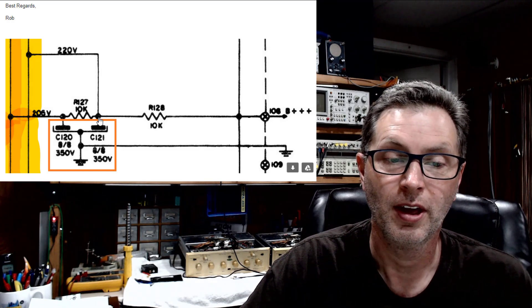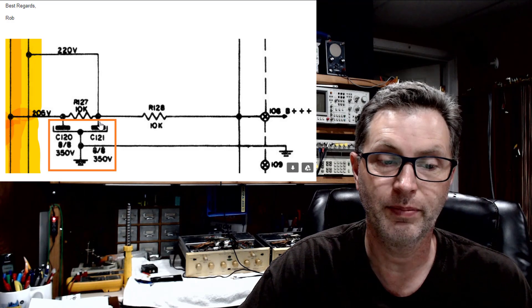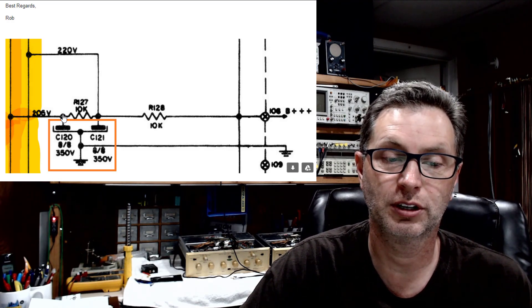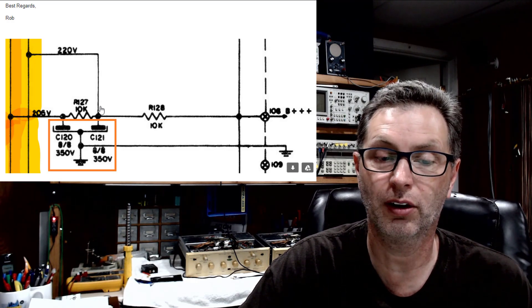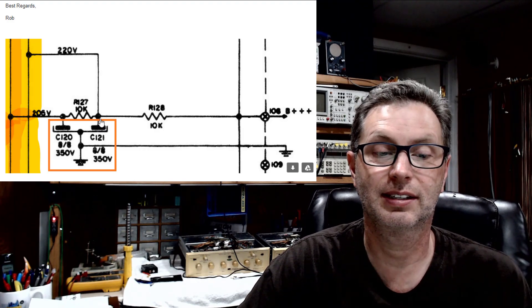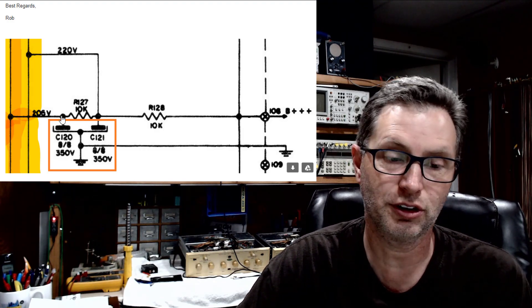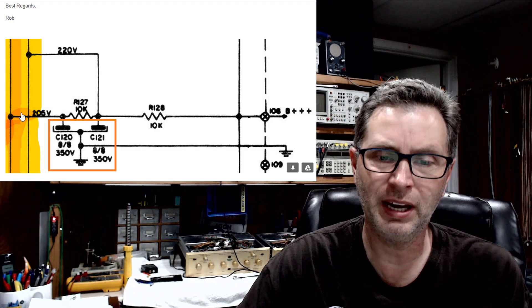In other words, you're dropping some voltage across this. So really what you have here in the circuit is a CRC connection that's being used as part of the power supply filtering.